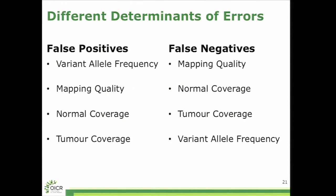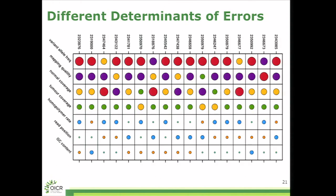There also turned out to be, maybe unsurprisingly, significantly different determinants of your different types of errors. False positives were dominated by differences in variant allele frequency and mapping quality. By contrast, mapping quality was still important for false negatives, but normal coverage was more important. In fact, normal coverage turned out to be more important than tumor coverage in this genome. Take that with a grain of salt, because this was the 100 percent cellular genome that we're looking at here, so that may influence why we're seeing that result.